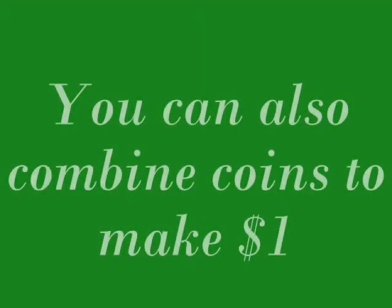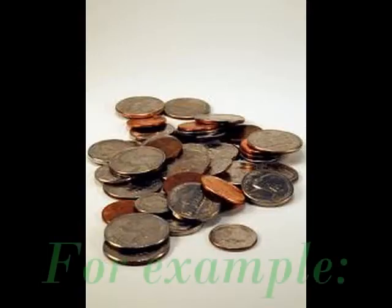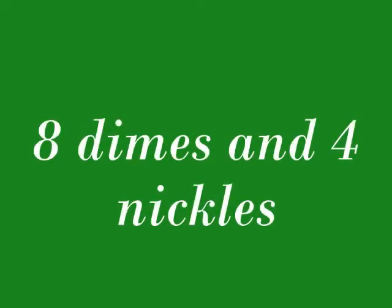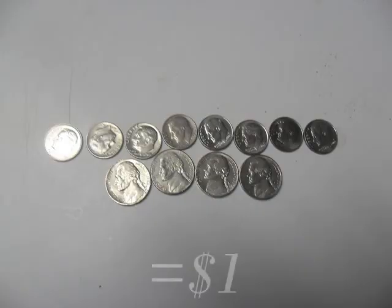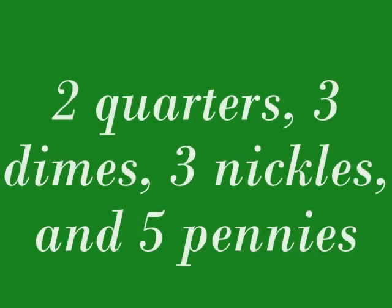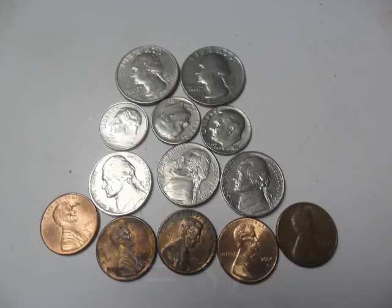You can also combine coins to make one dollar. For example, we can use eight dimes and four nickels to equal one dollar. Or we could also use two quarters, three dimes, three nickels, and five pennies to equal one dollar.